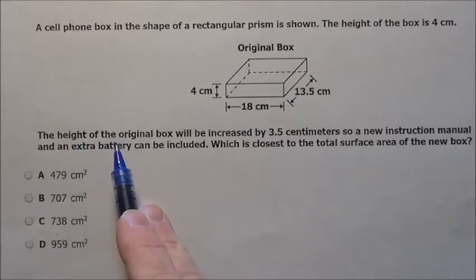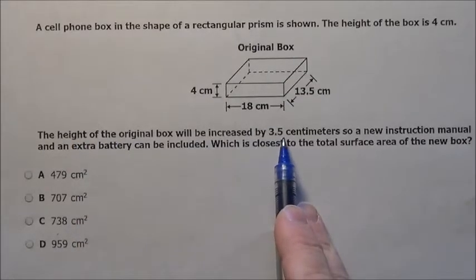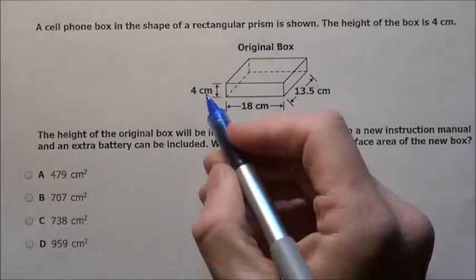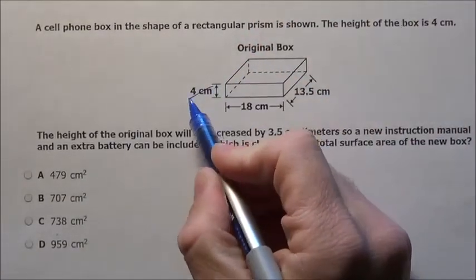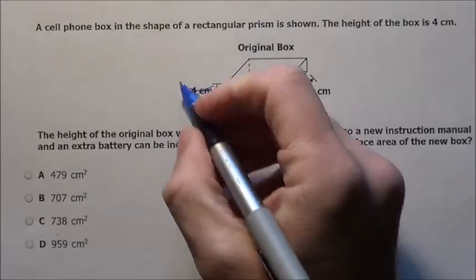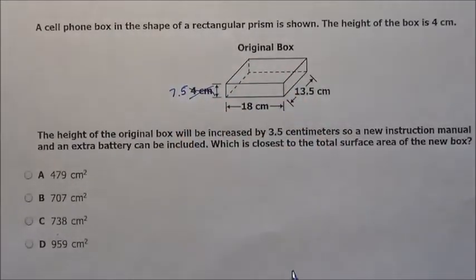But what they want to do is they want to change the height. The height of the original box will be increased by 3.5 cm. So we're going to simply just raise the box. This height of 4 is going to go 3.5 cm higher making its height simply 7.5 cm.